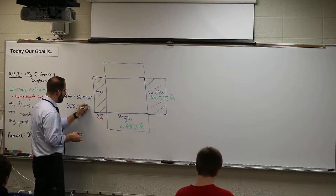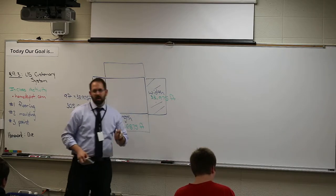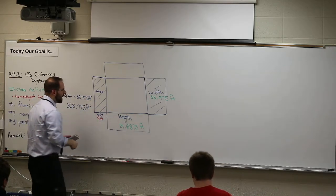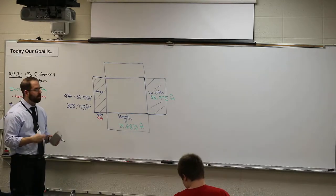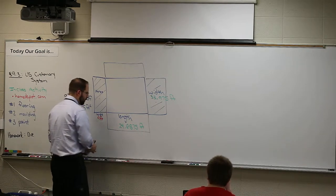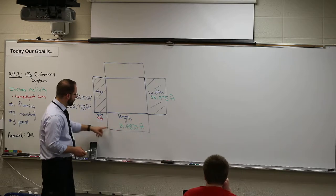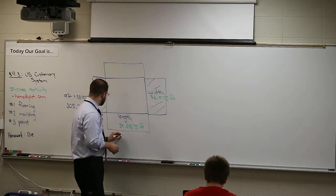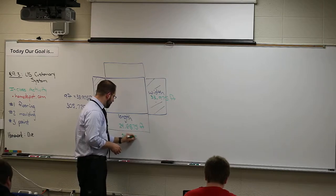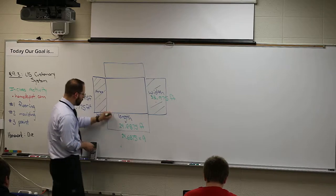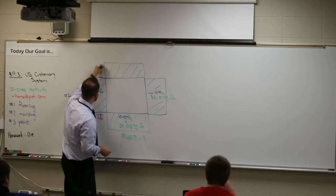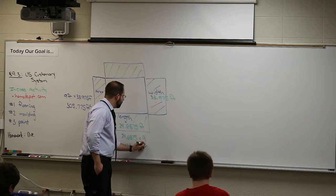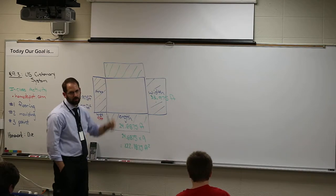33.975 times nine equals 305.775 square feet — that's the area of each of those two side walls. You have to add them together to get total area, so that's 305.775 plus 305.775. The front and back walls are different because they use the other dimension: 24.6875 times nine gives 222.1875 square feet for the front and back walls.